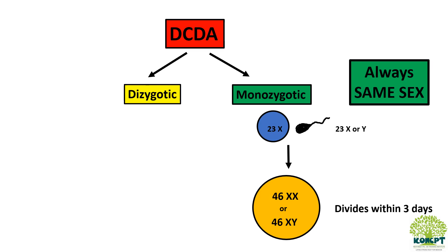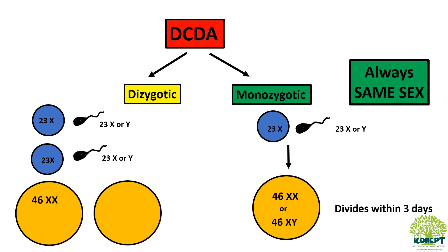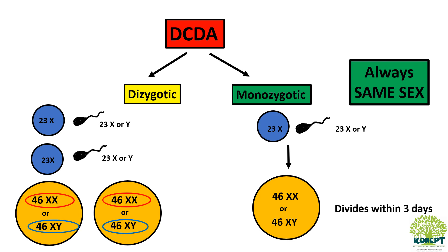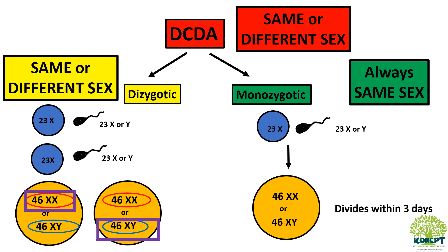In dizygotic twinning, there are two ovums fertilized by two separate sperms, each of which can be 23X or Y. This leads to the formation of two zygotes, each of which can be a boy or a girl. So the two fetuses can be girl and girl, girl and boy, or boy and boy. We can conclude that in dizygotic twinning, the babies can be of the same or different sex. Therefore, DCDA twins overall can be of same or different sex.